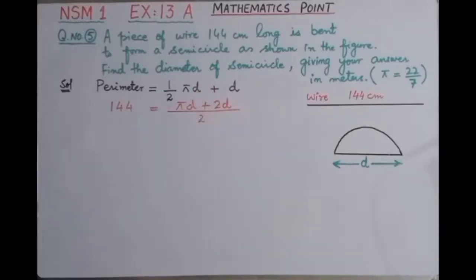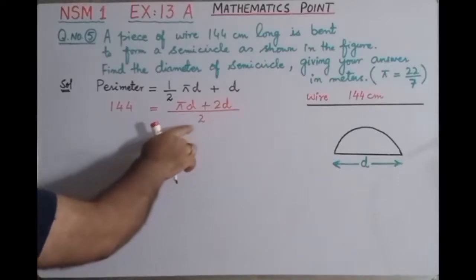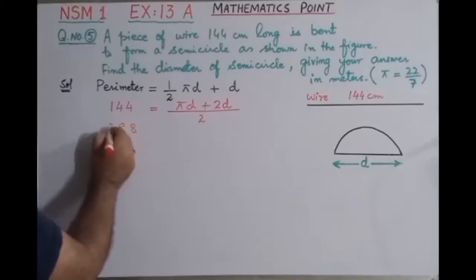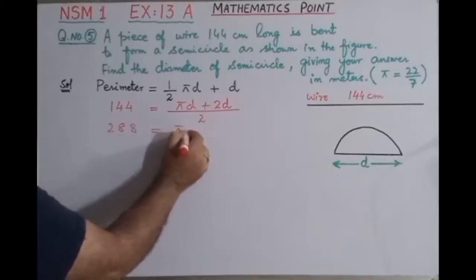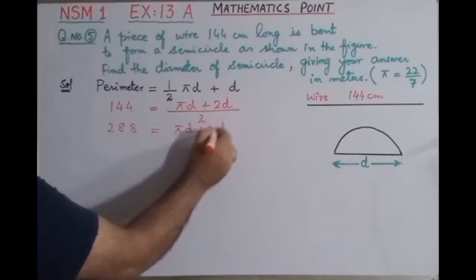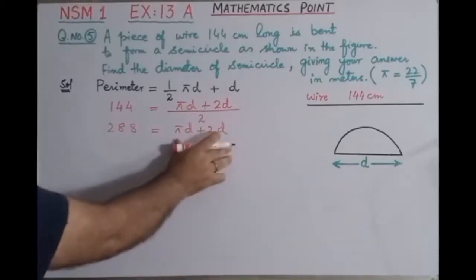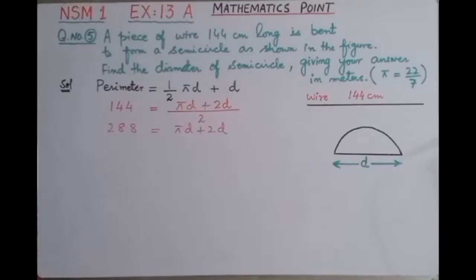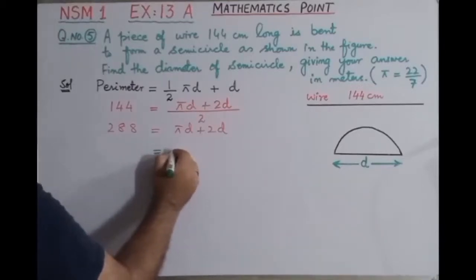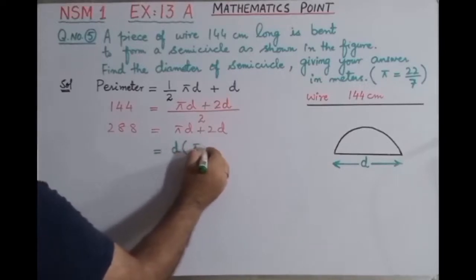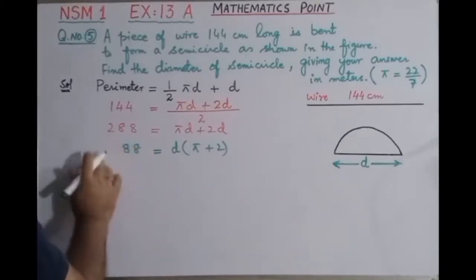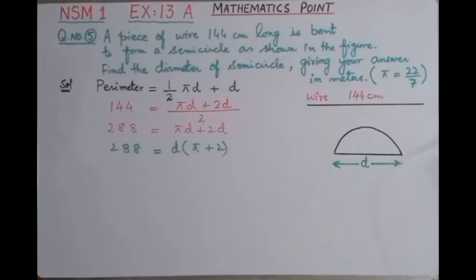In the next step we will multiply 2 with 144. When we multiply 2 with 144 we get 288, which equals pi into d plus 2d. In the next step on the right hand side, we can take d as common, so we can write as d into pi plus 2. Here is the value 288.